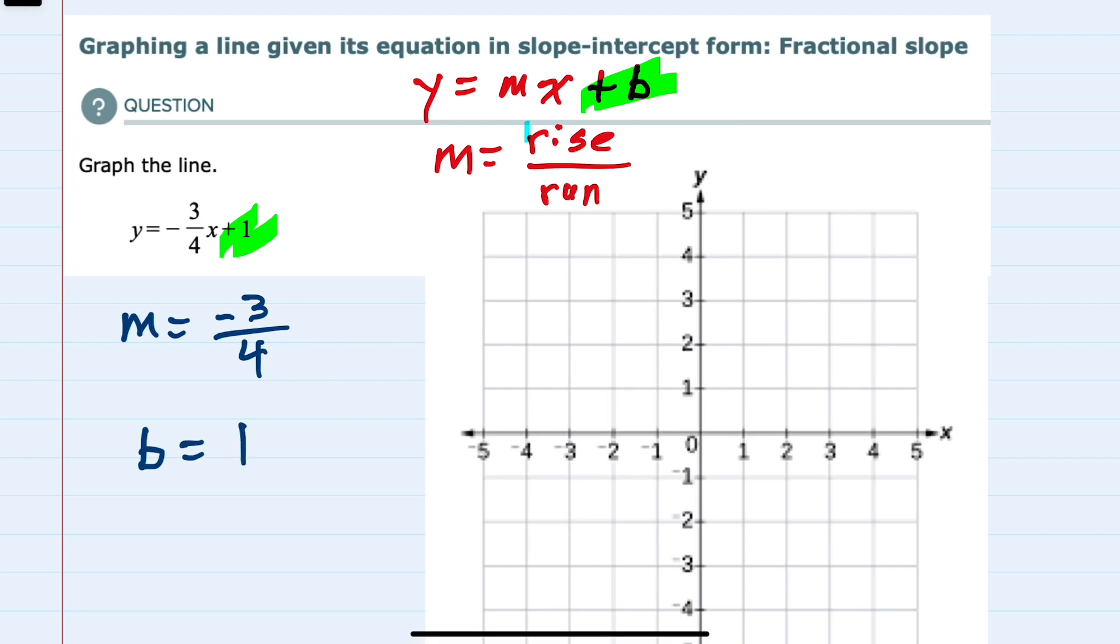Now that we've identified the m and the b, we can graph by first starting at the y-intercept. The y-intercept is where the line crosses the y-axis, which here is plus one, so we've started at the y-intercept.